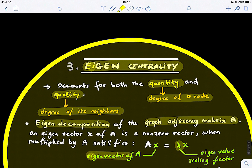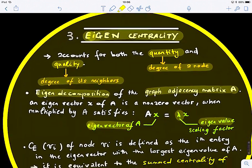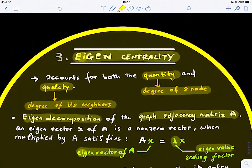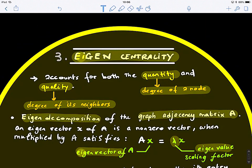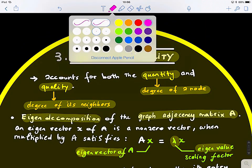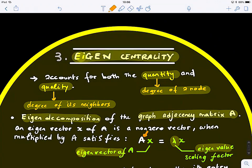This is a very simple definition of eigen decomposition. When we have a matrix A and we multiply it by a vector, the output is the same vector scaled up by a factor lambda. This means that vector is an eigenvector of A, and the associated lambda is its eigenvalue.